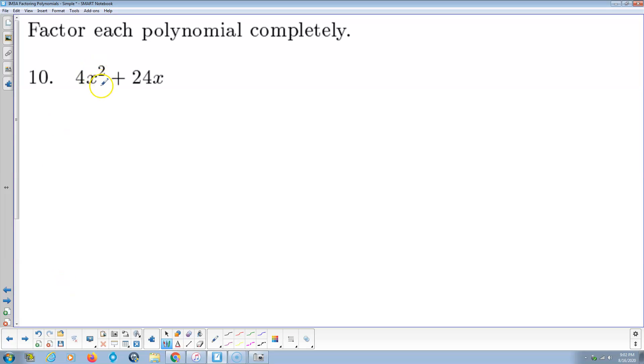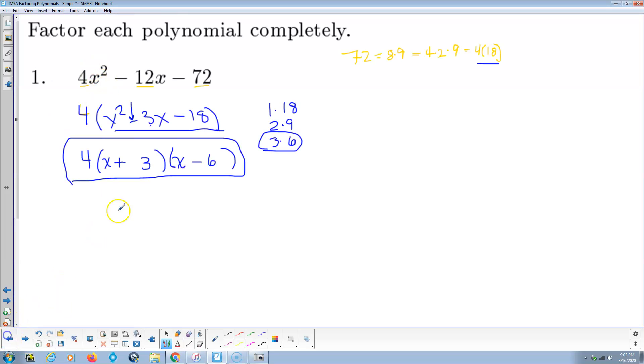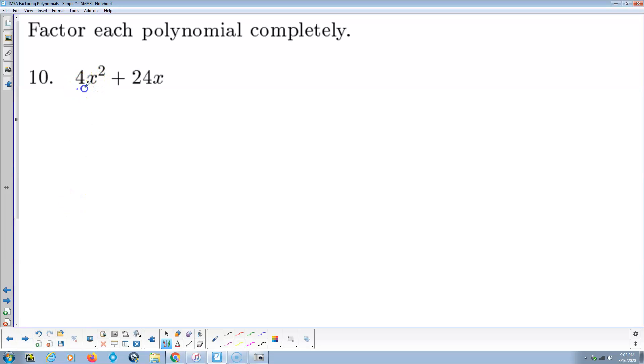Number 2, we look for something common. By the way, this was a quadratic because there were 3 terms. Whenever there's 3 terms, I'm thinking quadratic if there's nothing common. Here, 4 and 24 - 4 is common. x squared and x - x is common. That gives me 4x times x plus 6. I multiply back and check. 4x times x is 4x squared. 4x times 6 is 24x.